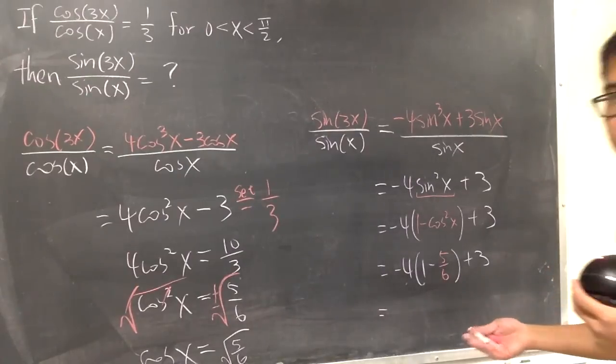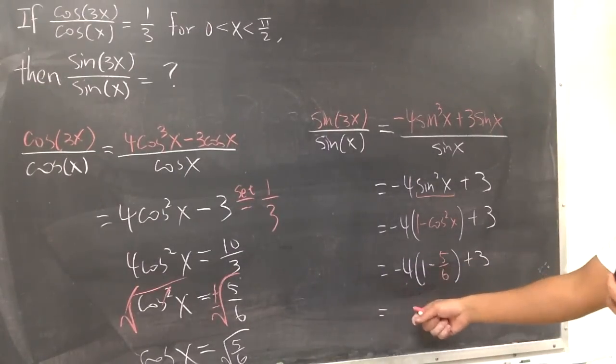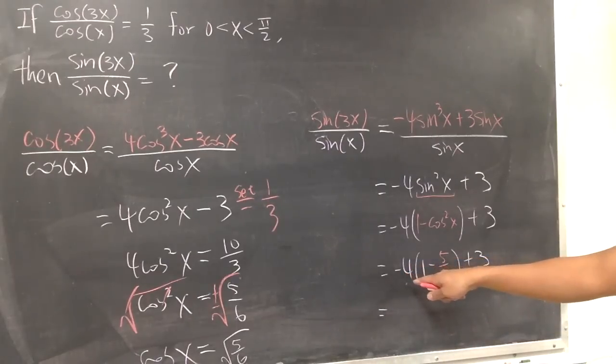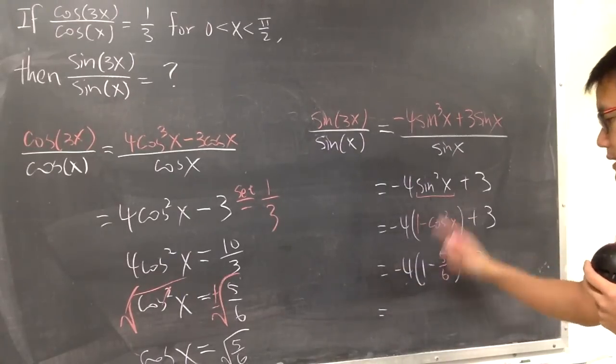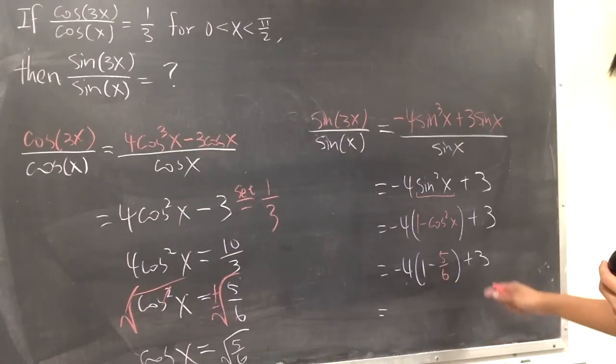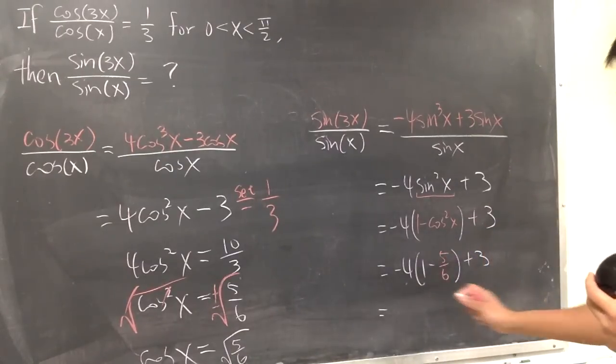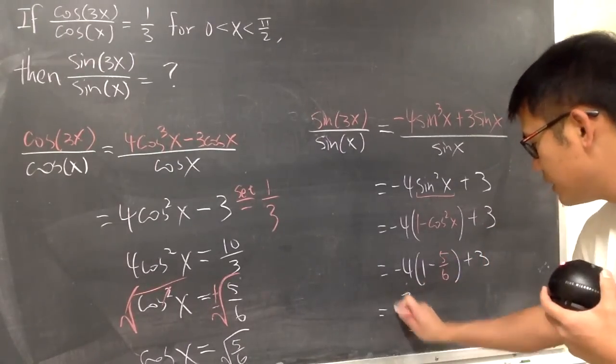Now here is just a little simplification business. 1 - 5/6 is 1/6, and then times that is going to be -4/6. So you reduce that, -2/3 plus 3, which is the same as -2/3 + 9/3, which is going to be positive 7/3 in the end. And this right here is the answer for that.